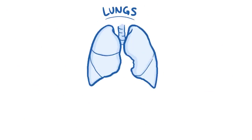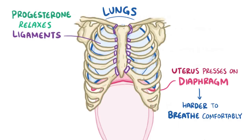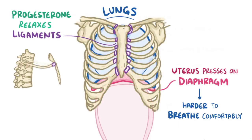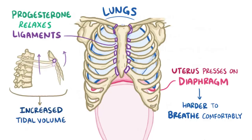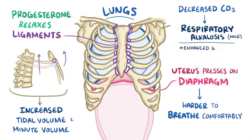The lungs get affected as well. The uterus pushes upward on the diaphragm, making it harder for pregnant women to breathe comfortably. There's some compensation because progesterone relaxes ligaments in the thorax, increasing the transverse diameter of the ribcage — like a bucket handle that swings out — and the anteroposterior diameter of the ribcage, like a handle that pulls up. These changes increase the tidal volume, the amount of air inhaled or exhaled per breath, and the minute volume, the amount of air inhaled or exhaled per minute. This decreases carbon dioxide levels in the blood, causing a mild respiratory alkalosis, which actually enhances gas exchange across the placenta, making it easier for the growing fetus to get oxygen.